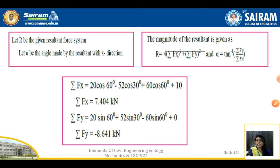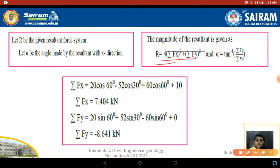Let R be the resultant of the given force system and alpha be the angle made by the resultant with respect to the x direction. The magnitude of the resultant force is given as R = √(ΣFx² + ΣFy²), and alpha = tan⁻¹(ΣFy / ΣFx).